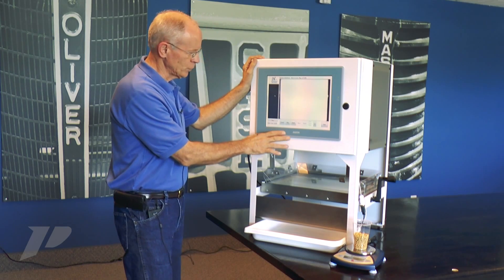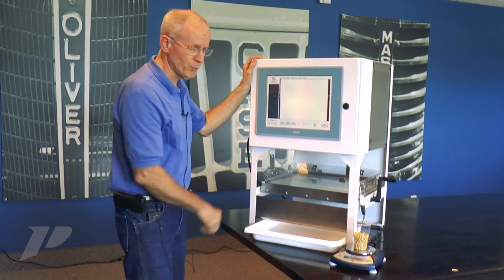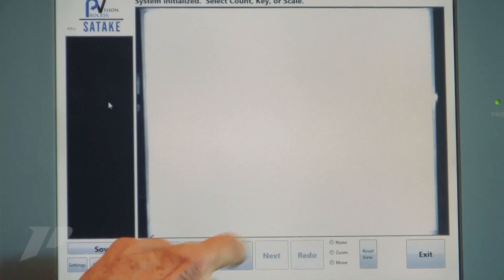We feel like you would very seldom want to just count. What you really want to know is count per pound, so we'd be using key or scale mode. I'm going to select scale mode.